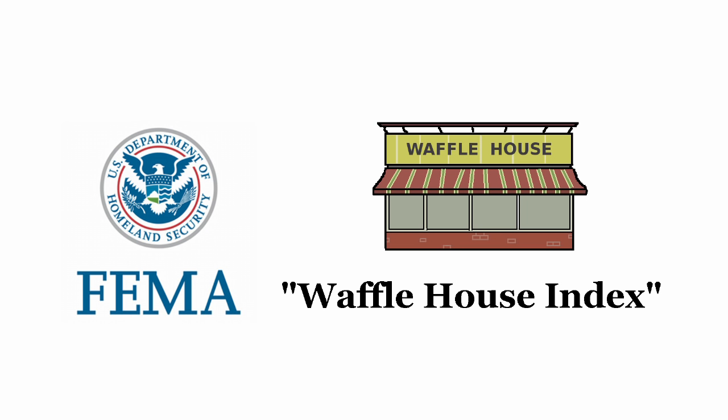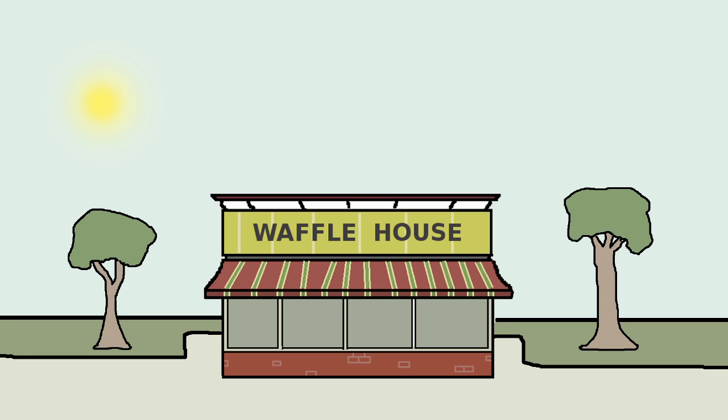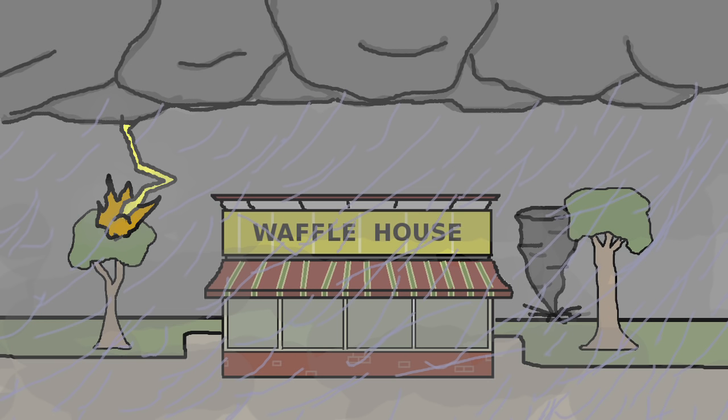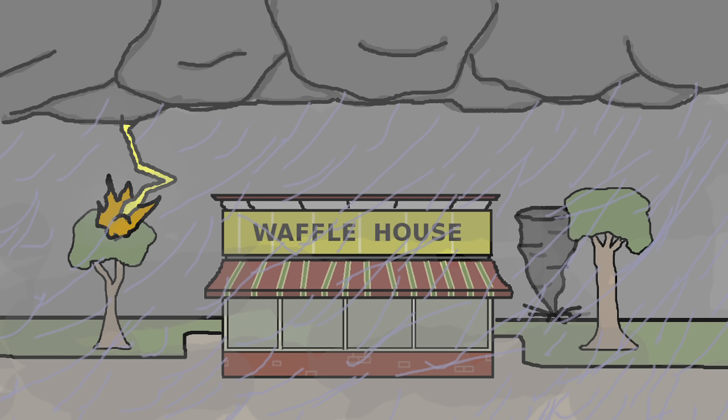In response to this business practice, FEMA came up with what is known as the Waffle House Index, which is a system to easily assess how badly an area is damaged by a natural catastrophe. If the Waffle House is fully open, they're in the green, which means things are basically fine. If the Waffle House is using their low supply menu, you're in the yellow, which means that the area is almost certainly mid-disaster.